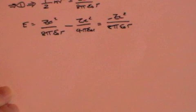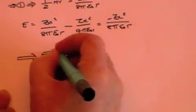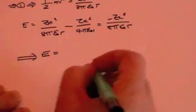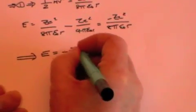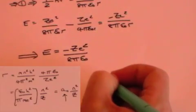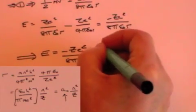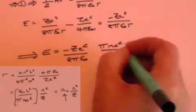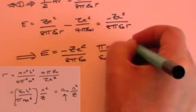Now, we are going to substitute into this equation the value that we got for r. So we will say that e equals minus z e squared over 8 pi epsilon naught, and now we need another r, but instead of r, we are going to write pi m e squared over epsilon naught h squared times z over n squared.